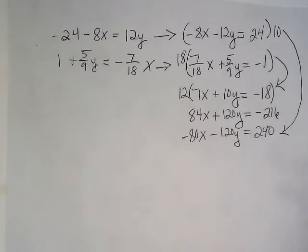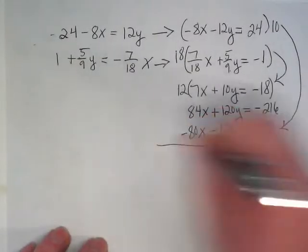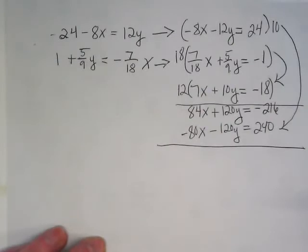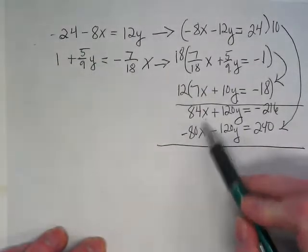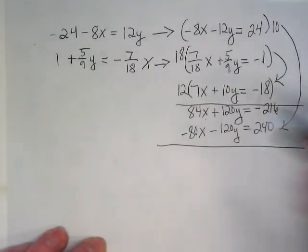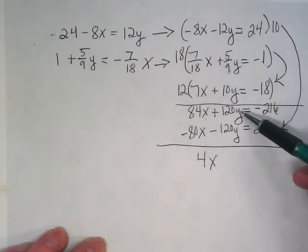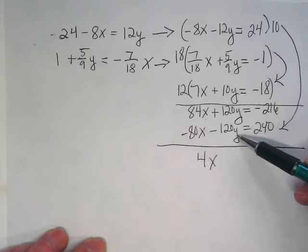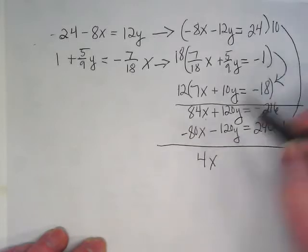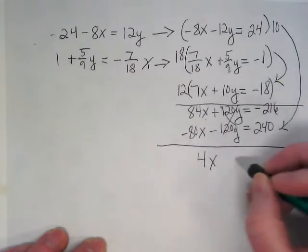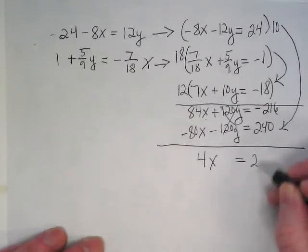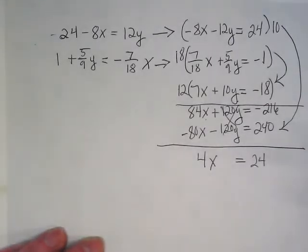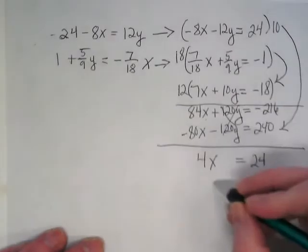It's a lot of work. Stupid fractions, right? Now, I'm going to take these two equations and I'm going to add them together. 84x minus 80x gives me 4x. Positive 120y minus 120y, zero. That's the eliminated part, is equal to 24. After all that work, x equals 6.